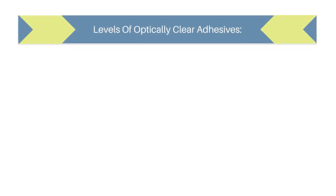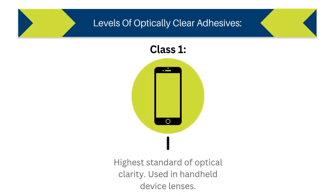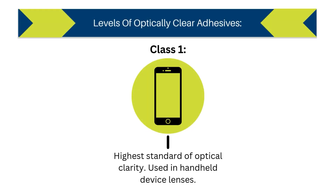Optically clear adhesives are classified into three levels based on their optical clarity. First is class 1, which is the highest standard of optical clarity and aesthetic appeal, used in handheld device lenses, optical instrumentation, and displays.